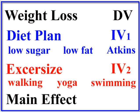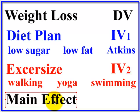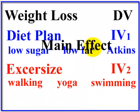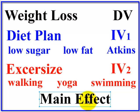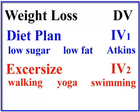The main effect is: is there a significant difference between the exercise groups? That's the main effect. Is there a main effect of the diet plan? So there are two possible main effects. Every IV has its own effect, so if you've got two IVs, there are two possible main effects — the main effect of exercise and the main effect of diet plan.